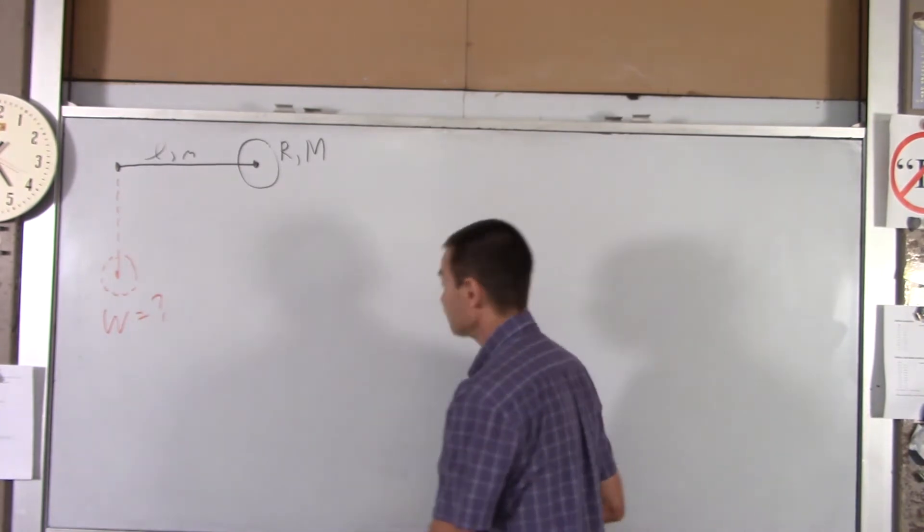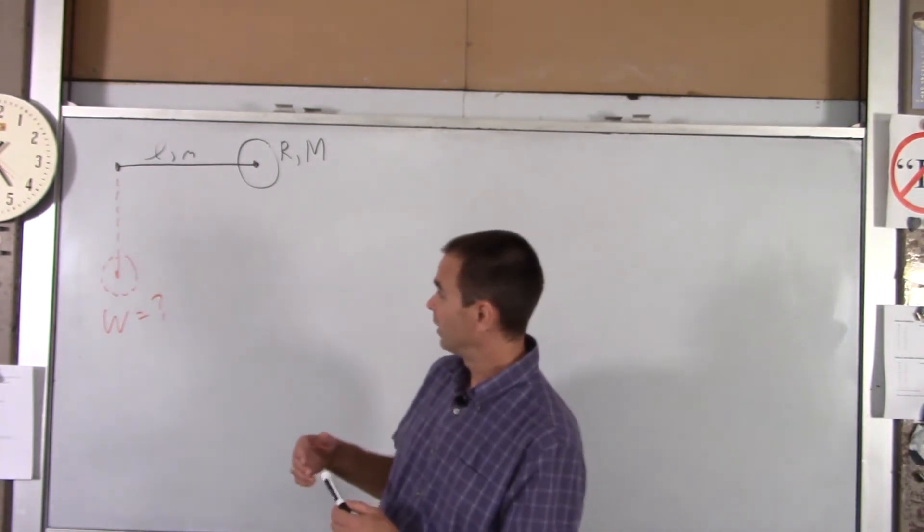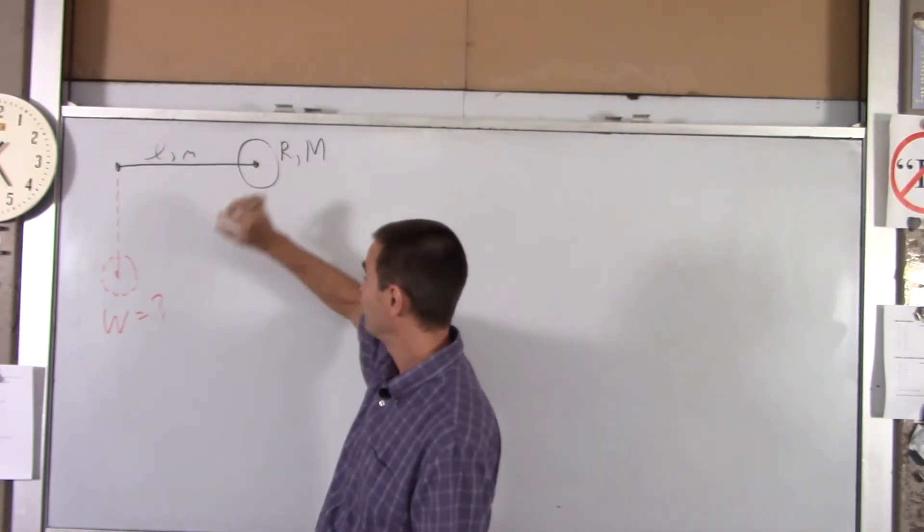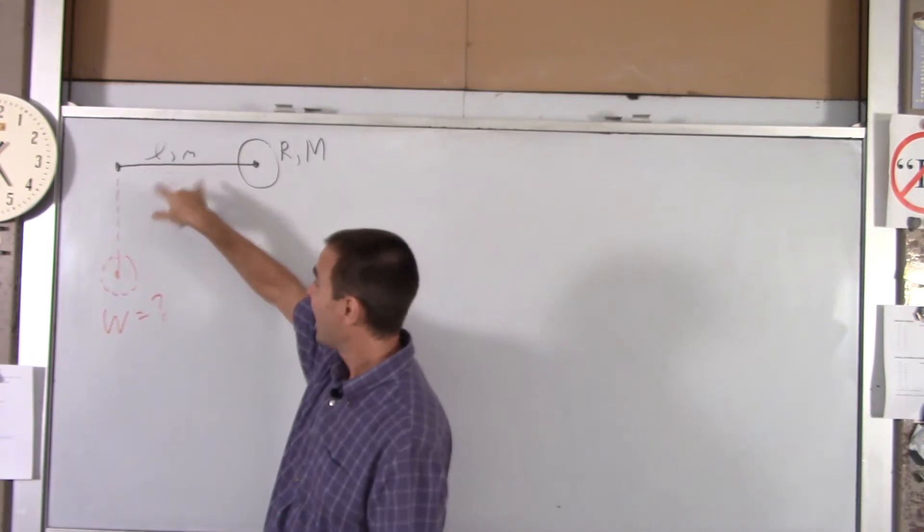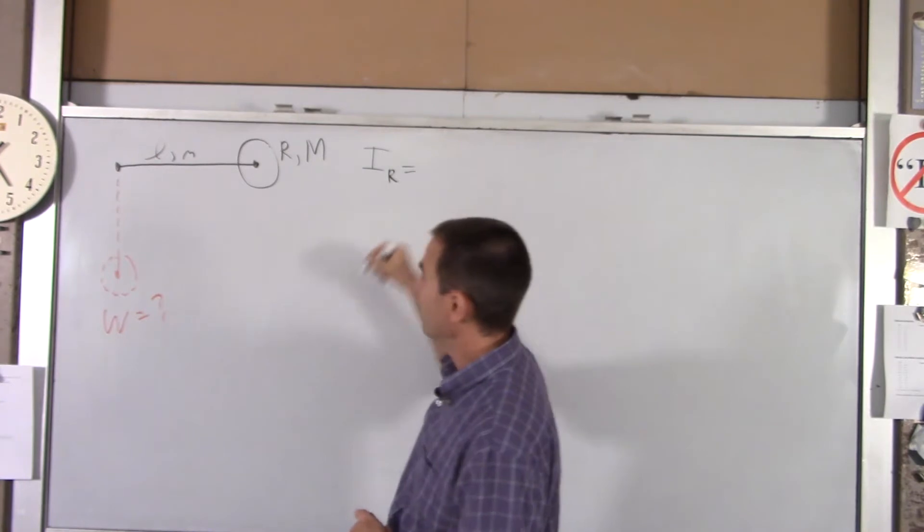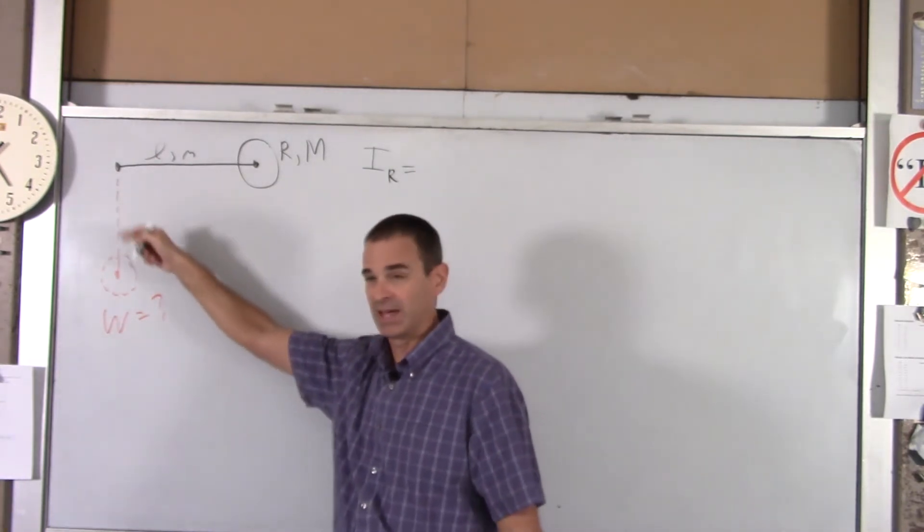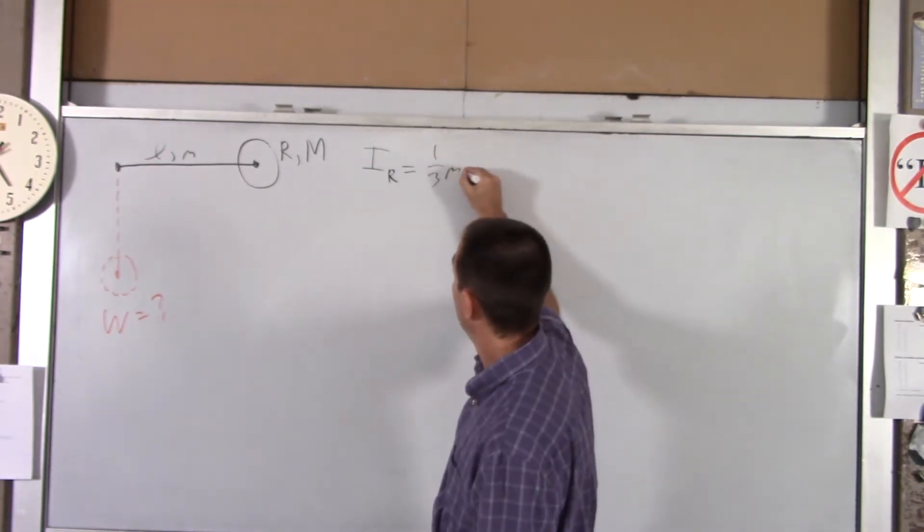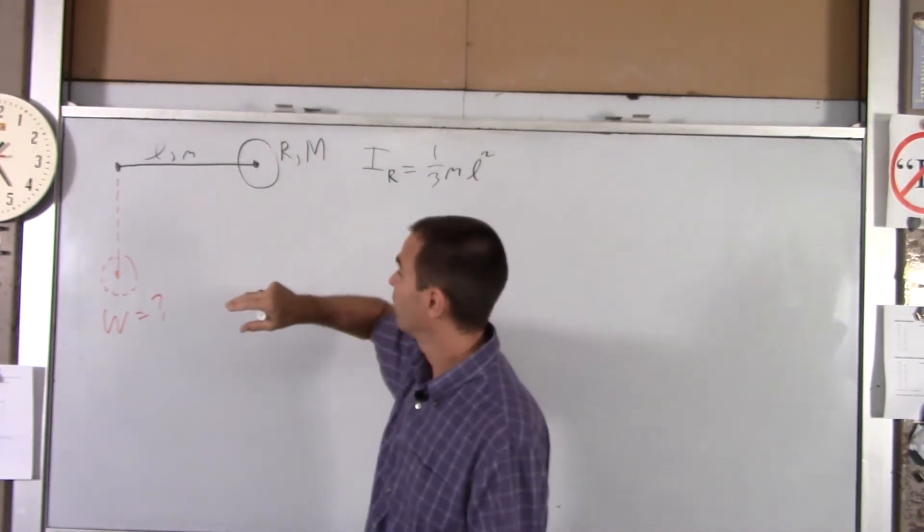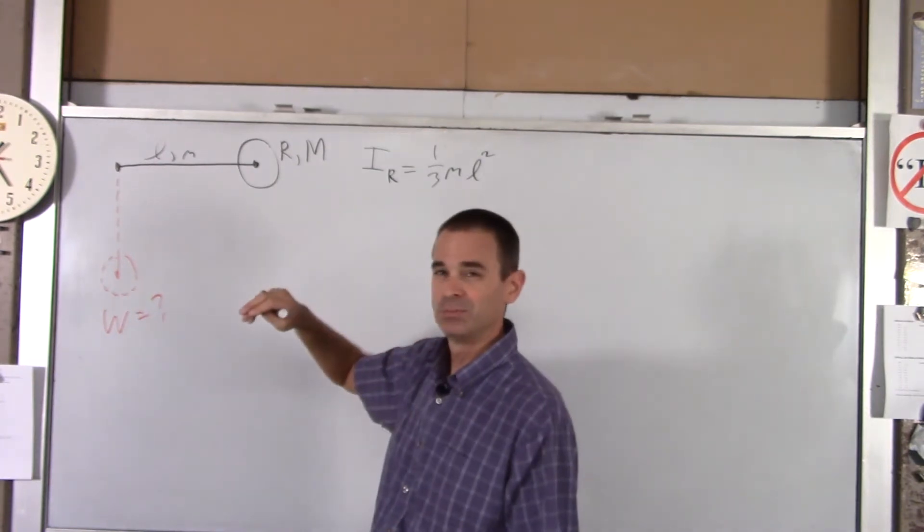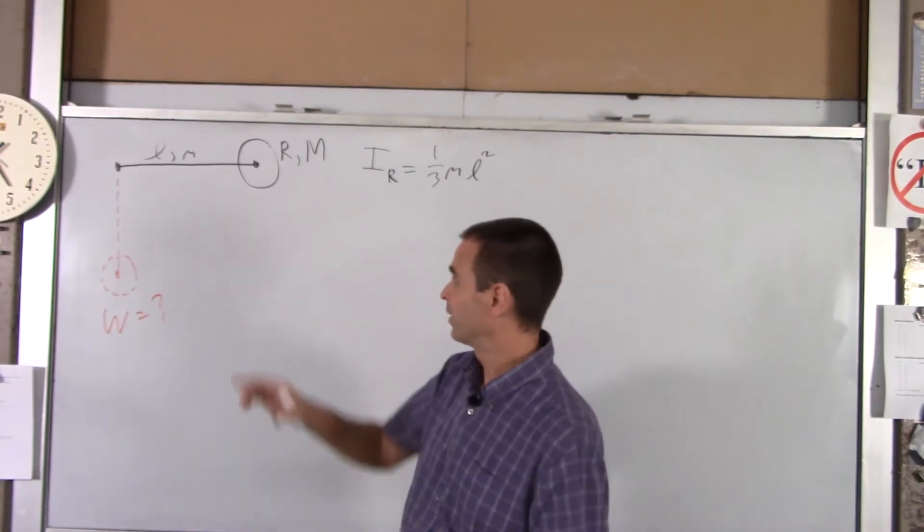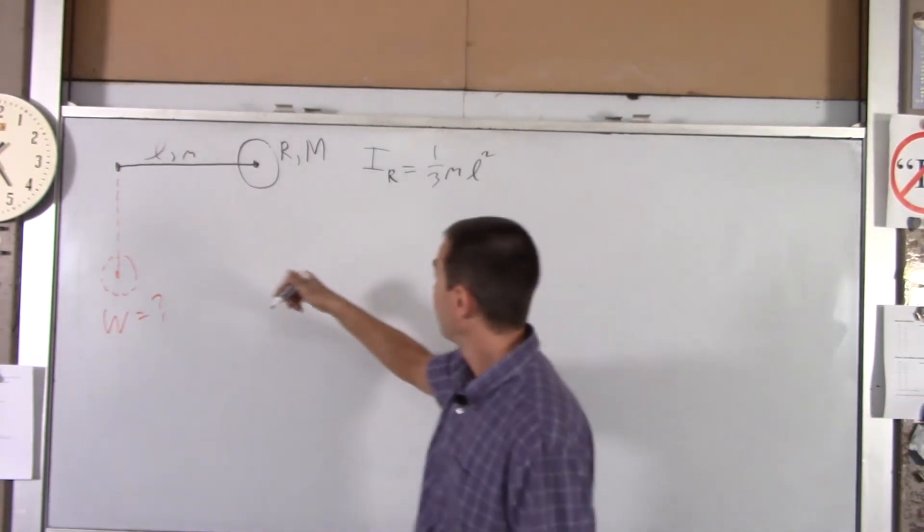We're going to sum the moment of inertia of the lollipop stick and the actual lollipop itself. For the rod, its moment of inertia about its end is simply one-third mL squared. That's easy. For the actual part that you eat here, we have to use - what do we got to use? Parallel axis theorem because we're not at the center.